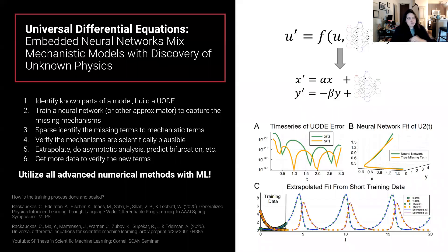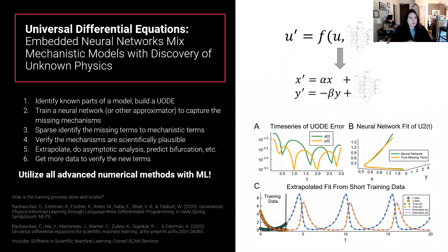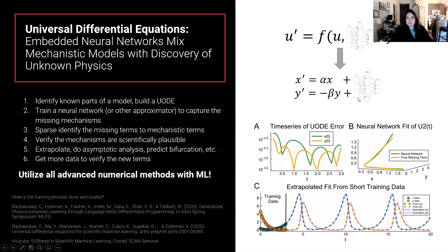One technique we've been working on is the universal differential equation. A neural ODE is where U-prime equals a neural network and you're learning everything about the physics. The nice thing about the universal differential equation is it allows you to embed prior knowledge. For example, if you have some knowledge about a differential equation system, you can specify the known parts and let the neural network learn the unknown parts. With the Lotka-Volterra equations, we know rabbits grow alone and wolves die alone without a food source, so there must be some interaction between them.